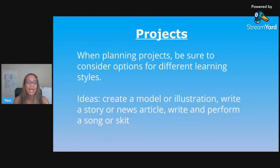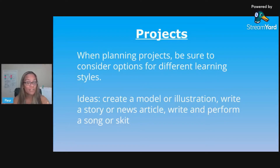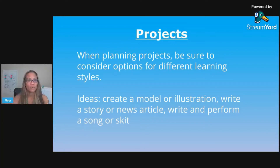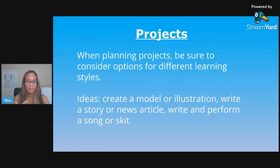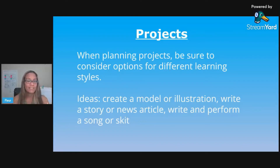For science projects, when planning projects, be sure that you're considering options for different learning styles if possible. You can have just one project that the whole class does — like a 3D cell model project during a cells unit — or you can offer different options, such as creating a model or illustration, writing a story or news article, or writing and performing a song or a skit. You can also do this with grade-level students, maybe modified, giving them two choices or incorporating multiple elements into one project. Consider those different learning styles when planning your projects.